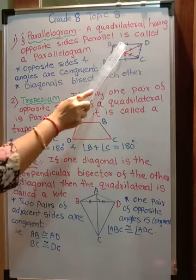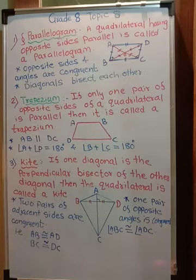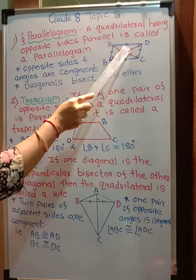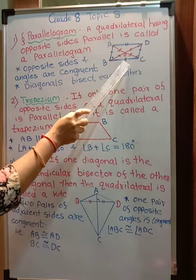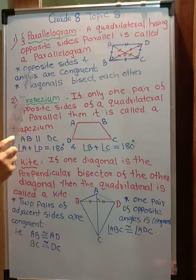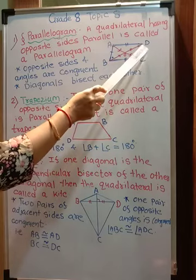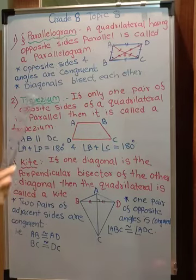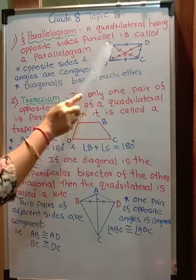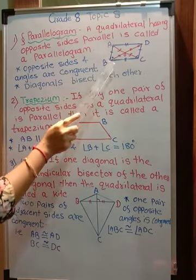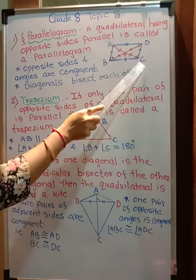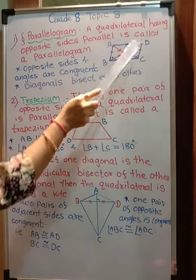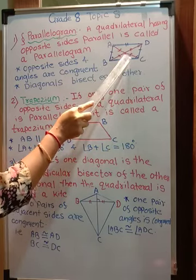Now what are the properties? Opposite sides are parallel as well as congruent. Opposite angles are also congruent: angle B will be equal to angle D, and angle A will be equal to angle C. Another property: diagonals bisect each other. Bisect means dividing into two equal parts. AC is one diagonal and BD is another diagonal. AO will be equal to OC, and BO will be equal to OD.